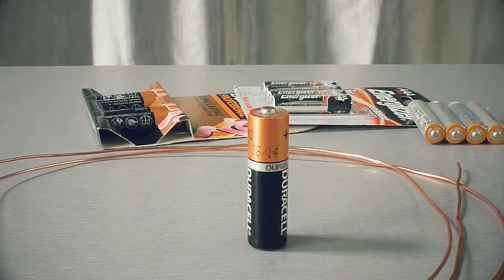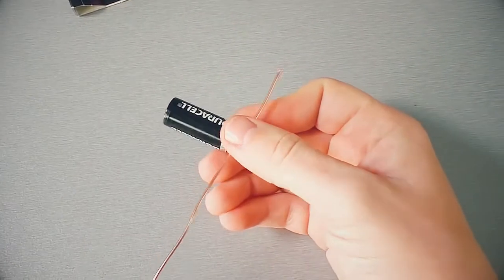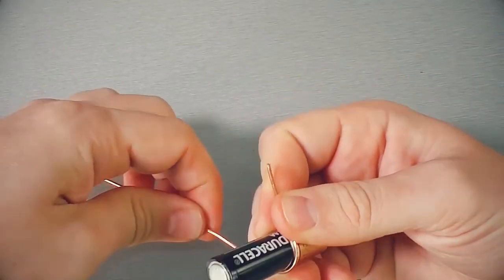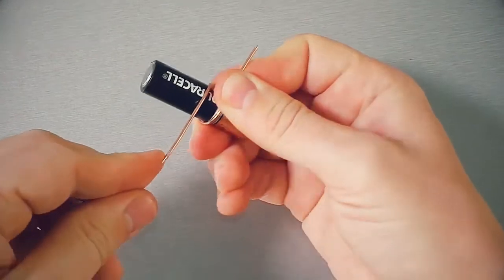First of all, I will make a spiral made of copper wire using AA battery. It's quite simple, isn't it?